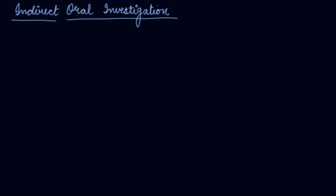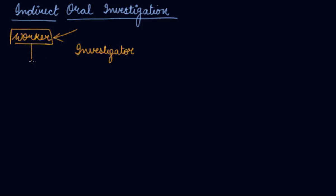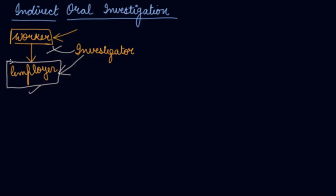Please download Scholars Learning app. Indirect oral investigation is the other method of collecting data from primary sources. When you have to collect data for a worker, you do not directly take the information from the worker. You are an investigator who knows the worker very well — the employer. So as an investigator, rather than going to the worker, you go to the employer and take the information about the worker.